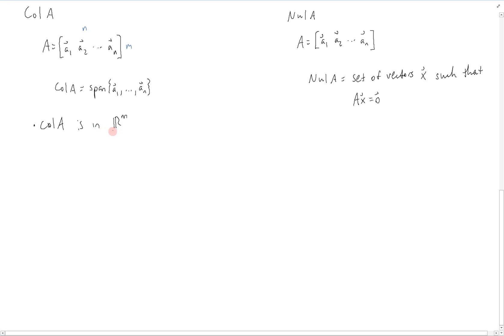We can see that the column space is in R^m because it's a linear combination of the columns, and each column is m-dimensional. It has m rows. Therefore, the summation of a bunch of these m-dimensional vectors will also be m-dimensional, and therefore, the column space of A is in R^m.